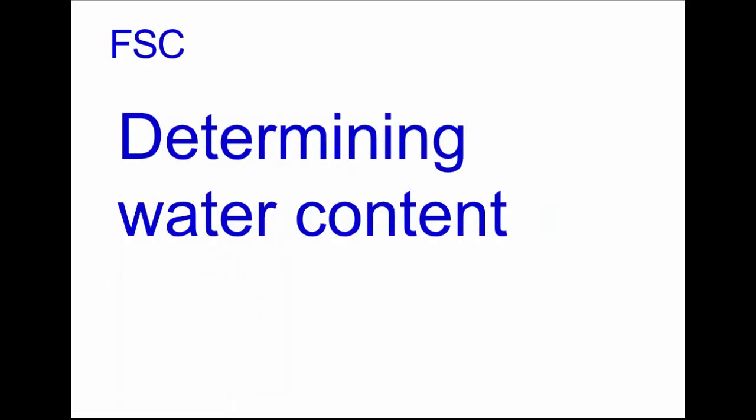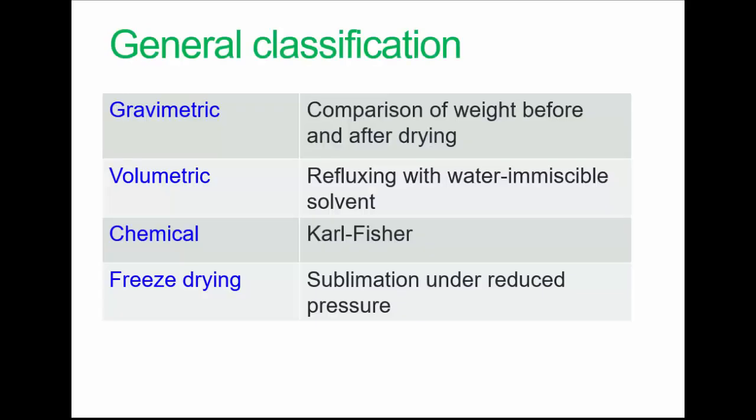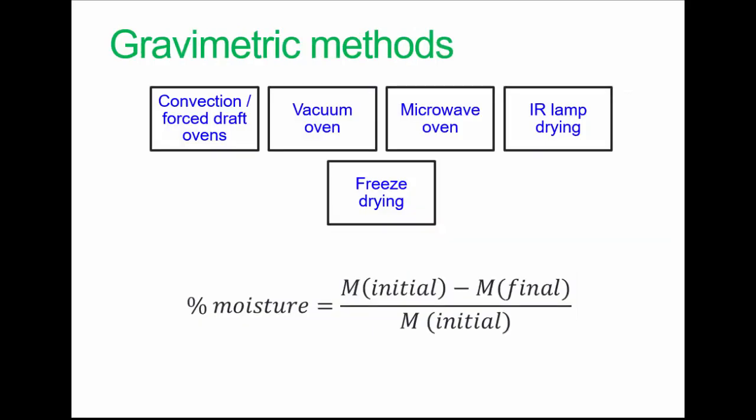To wrap up, determining water content. There are a number of methods. These are the main methods used. As usual in chemical analysis, many other approaches are available. Gravimetric methods are a technique through which the amount of an analyte—in this case water—can be determined through the measurement of its mass. In these methods, water is removed by various approaches and a simple calculation done.